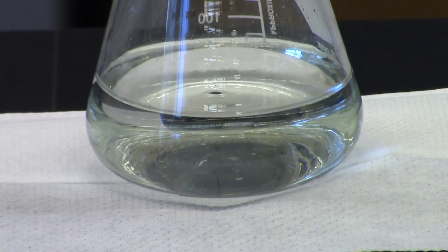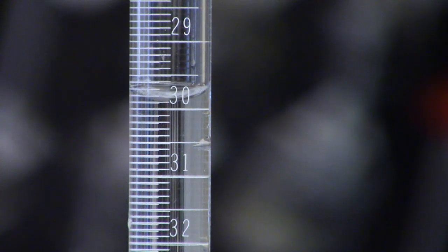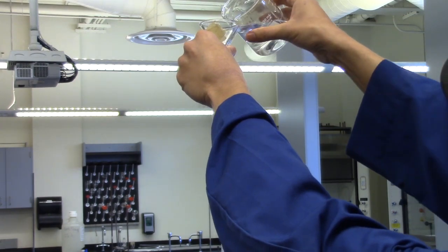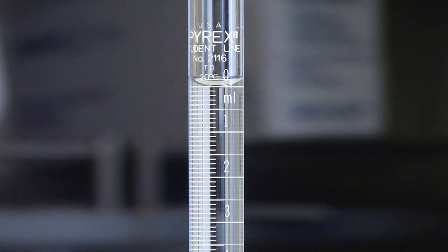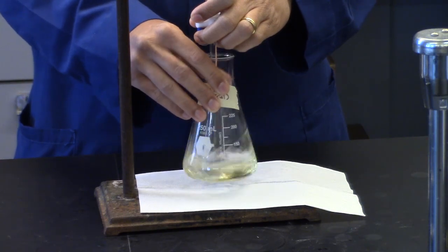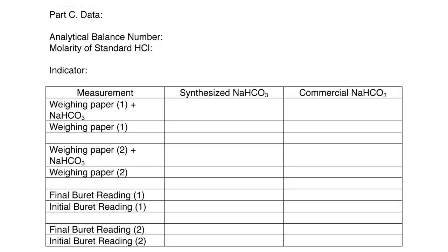Titrate to the appropriate color endpoint. Record the final burette reading. Refill burette with standard hydrochloric acid and record the initial burette reading and start second sample. Repeat for the remaining two samples. Your data should look like this.